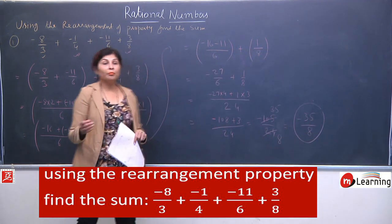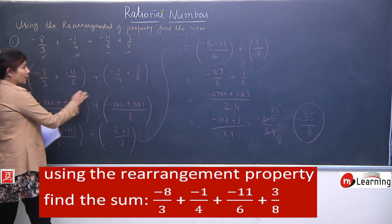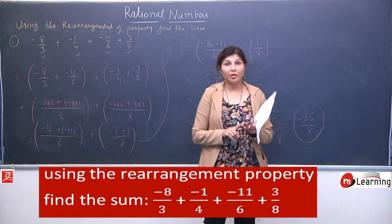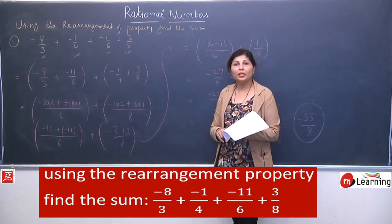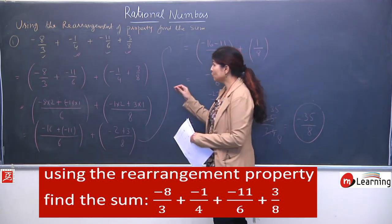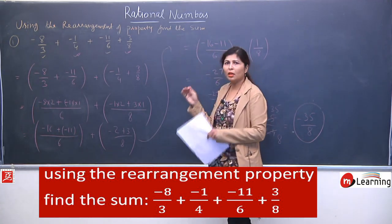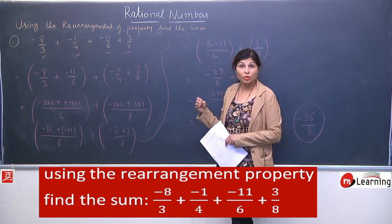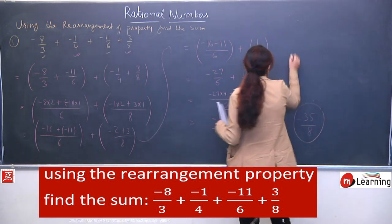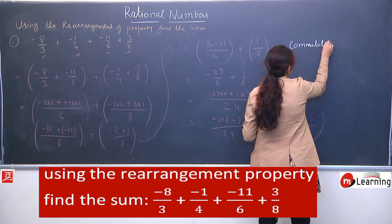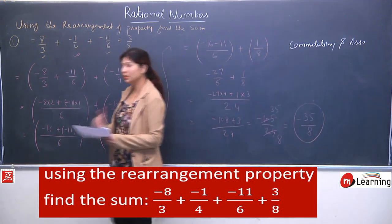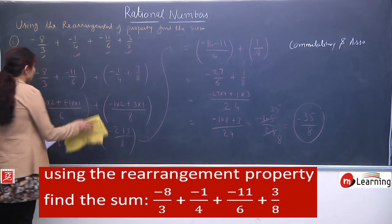Here we made a suitable arrangement — we took the combination of 3 and 6, and 4 and 8, and used brackets. The properties applied here are commutativity and associativity. These two properties make the question very easy and smooth. If we had taken all four terms together or an unsuitable combination, the question could have been tougher. You can write: by using commutativity and associativity, we arranged this question in a suitable manner.